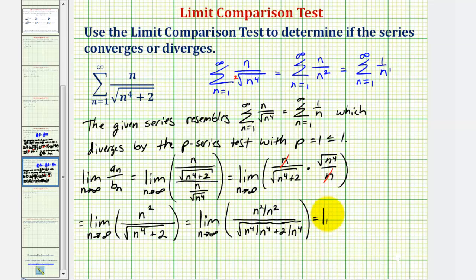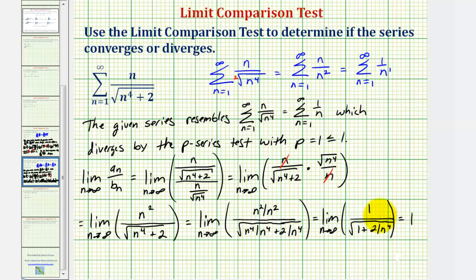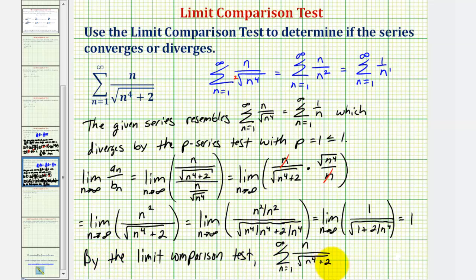Simplifying, we get the limit as n approaches infinity of one divided by the square root of one plus two divided by n to the fourth. As n approaches infinity, the fraction two over n to the fourth approaches zero, leaving us with one divided by one, which equals one. This limit is positive and finite. Because we compared the given series to a series that diverges, the given series also diverges. Therefore, by the limit comparison test, the given series diverges.